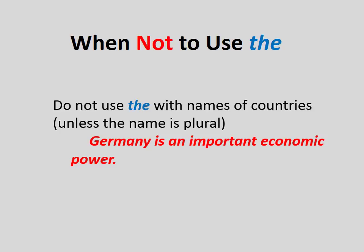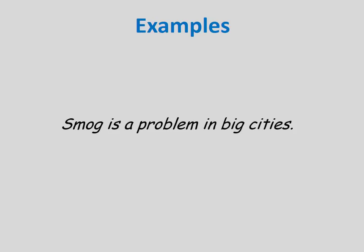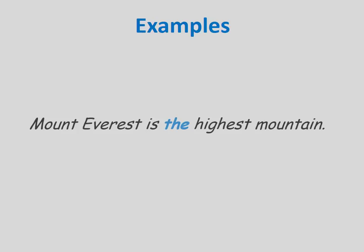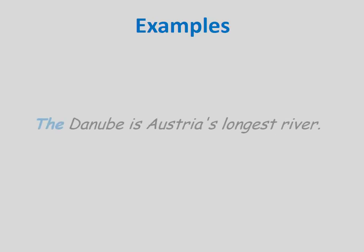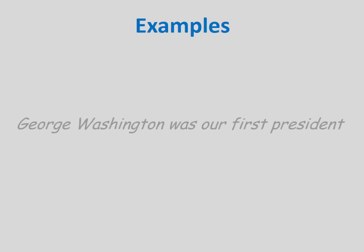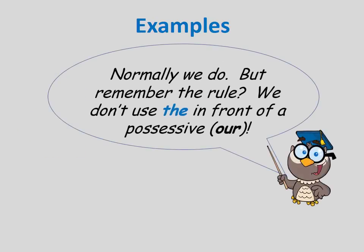Practice examples: 'Most children like candy.' 'Smog is a problem in big cities.' 'I arrived in the USA last Monday.' 'Mount Everest is the highest mountain.' 'You should eat breakfast every day.' 'The Danube is Austria's longest river.' 'I speak English.' 'It is the 4th of July.' 'George Washington was our first president.' — Note: normally we use 'the' before 'first,' but remember the rule: we don't use 'the' in front of a possessive like 'our.'